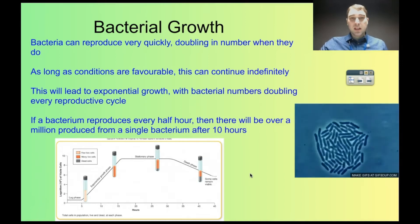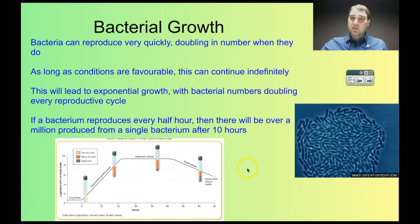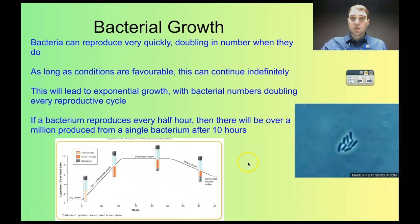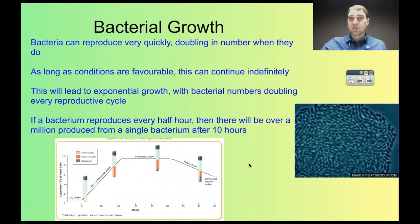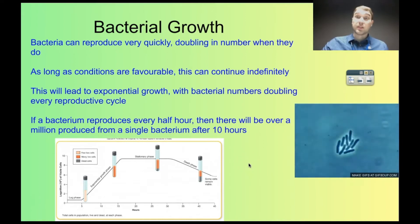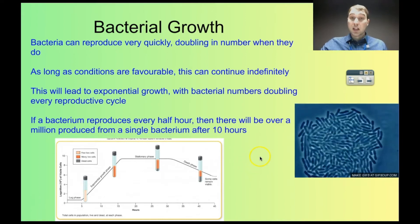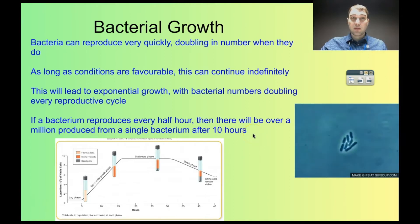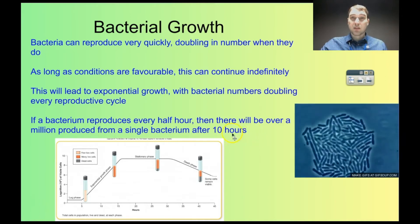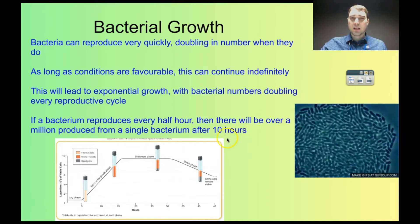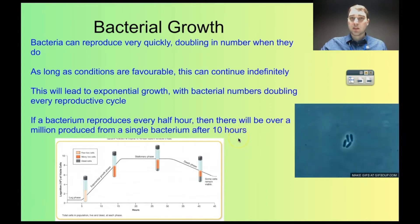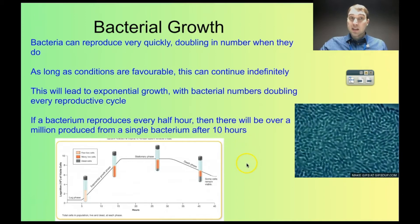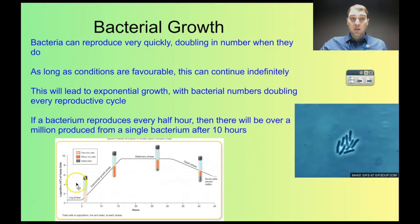So what that means is one bacteria turns into two, two into four, four into eight, eight into sixteen, sixteen into thirty-two, thirty-two into sixty-four, and so on. If you follow that through, if bacteria are reproducing every half an hour, then after about ten hours you'll have a million bacteria from a single bacterium. So that's exponential growth.